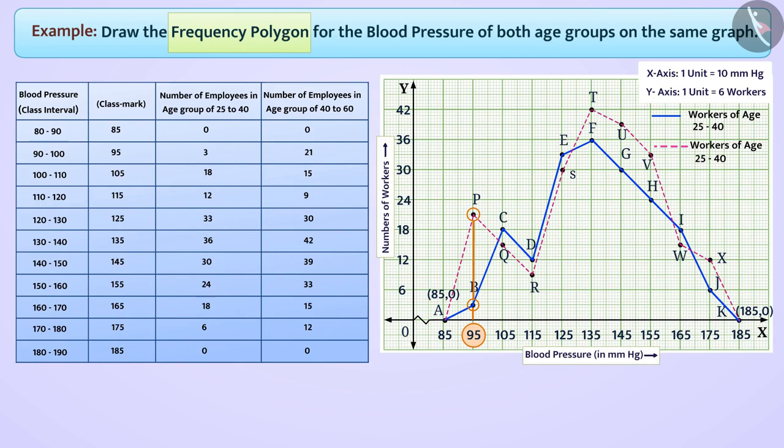We can also see that in both age groups, maximum number of workers have blood pressure as 135 mmHg. Here, we see that point S and point G are on the same horizontal line, which means that the number of workers in age group 40 to 60 with 125 mmHg blood pressure is equal to the number of employees in age group 25 to 40 with blood pressure 145 mmHg.